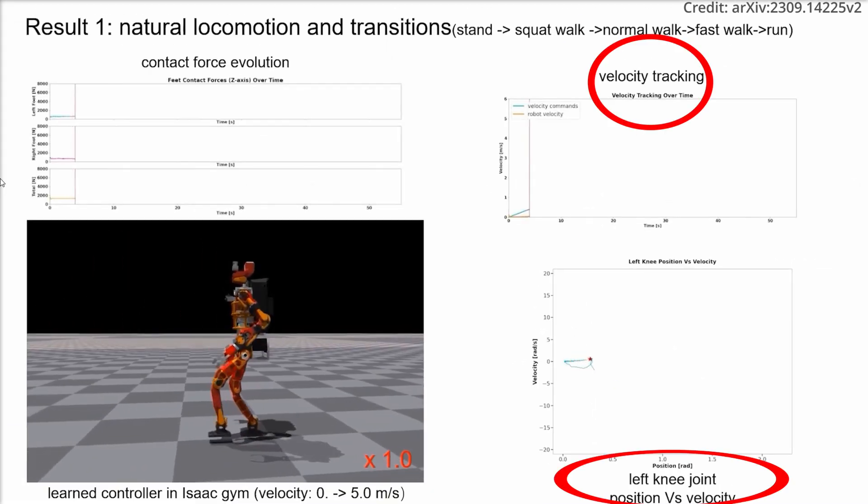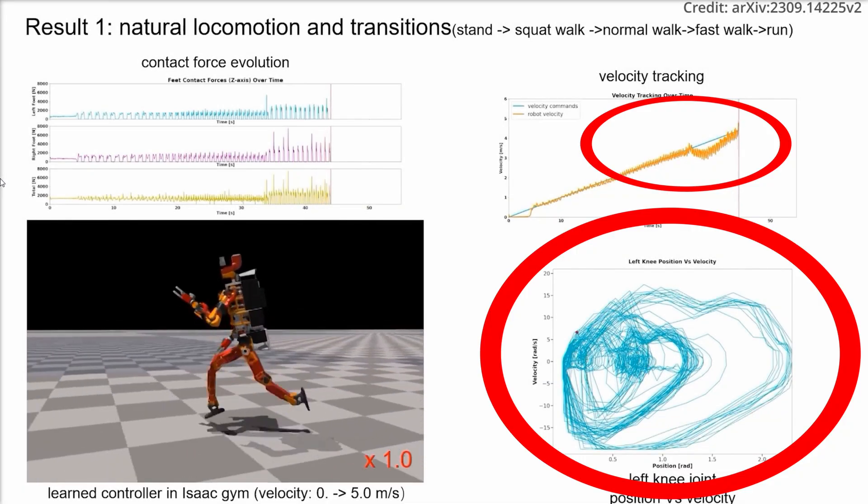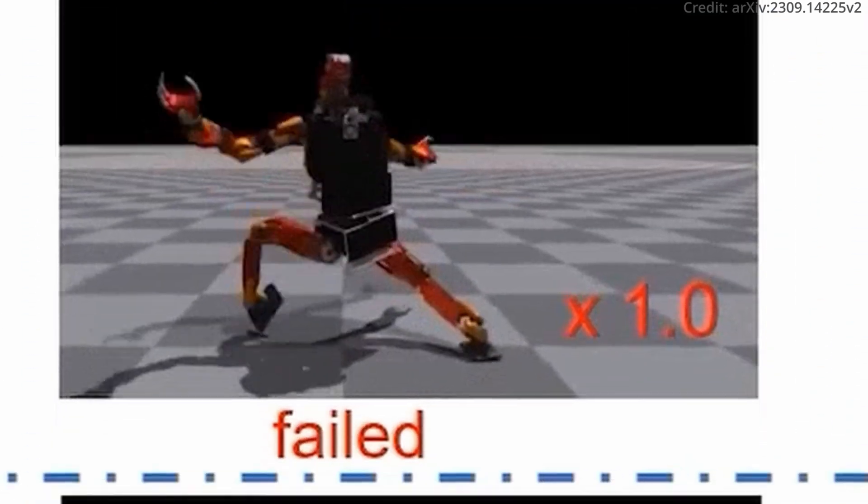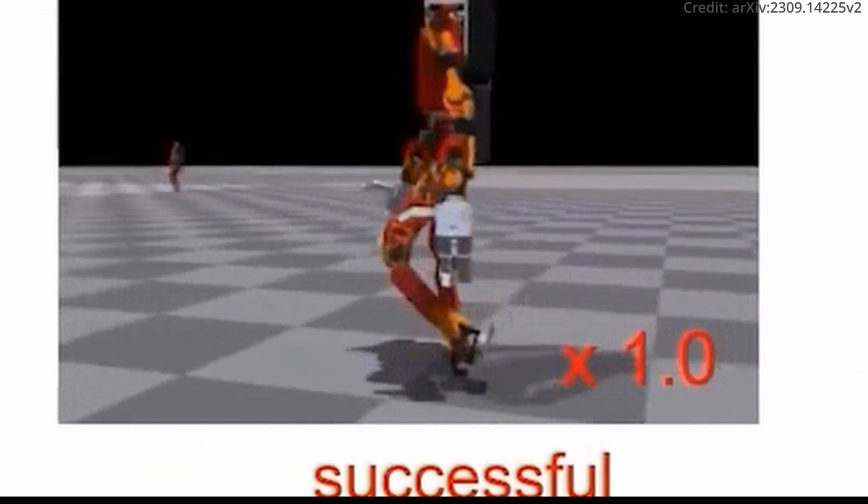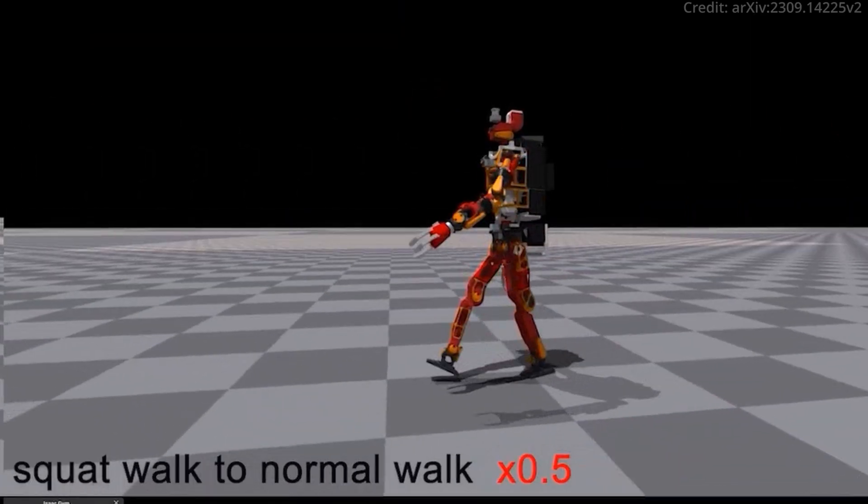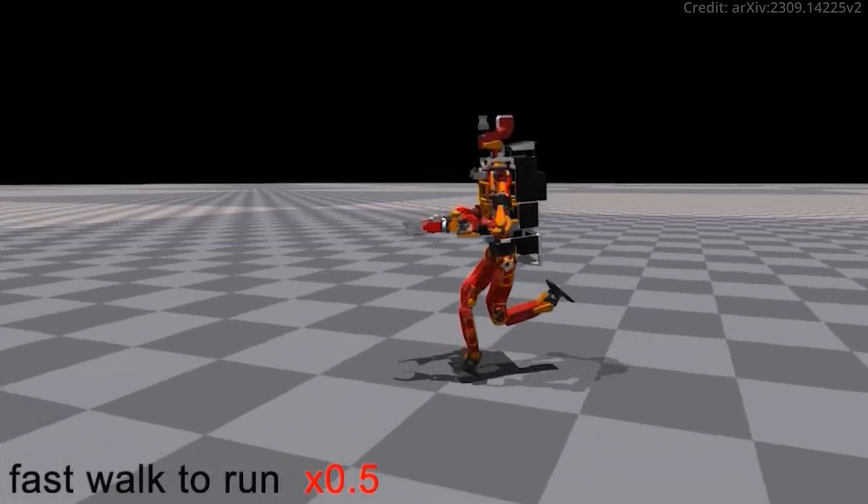As a result, the researchers have not only stabilized the training process but also thwarted model collapse and the forthcoming control policy is nothing short of revolutionary, demonstrating a spectrum of locomotion patterns including standing, push recovery, squat walking, human-like straight leg walking, and dynamic running.